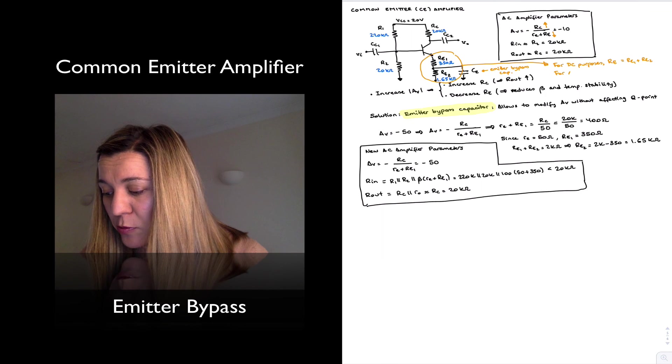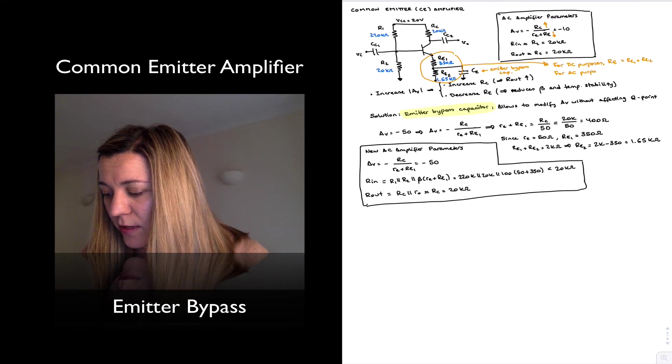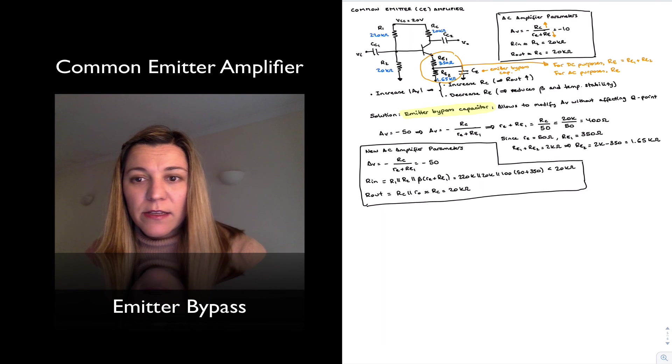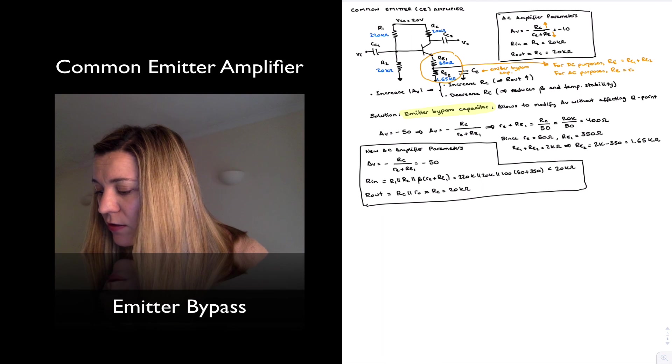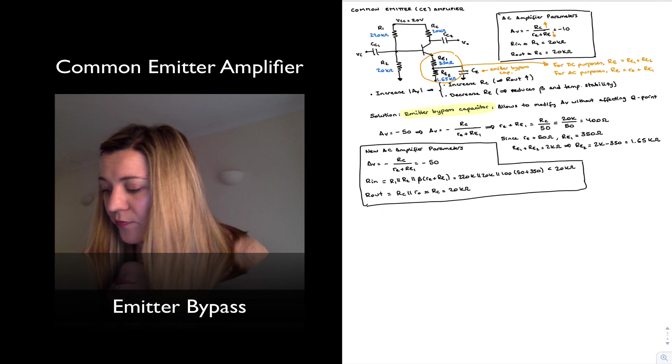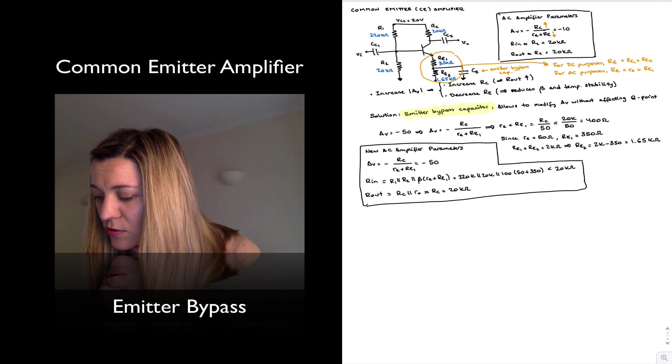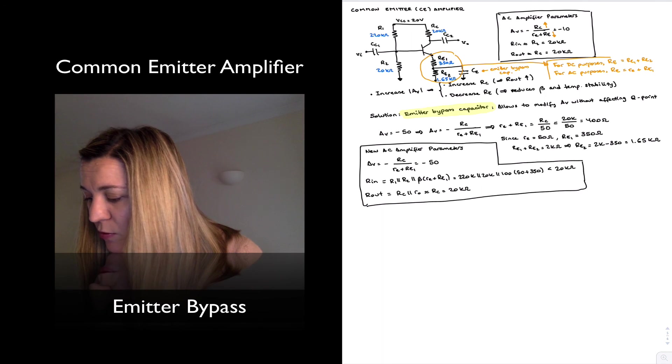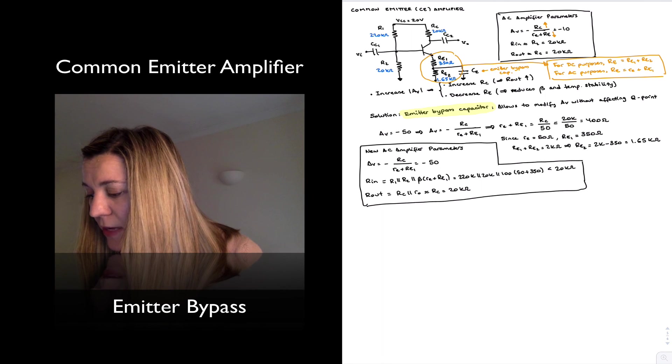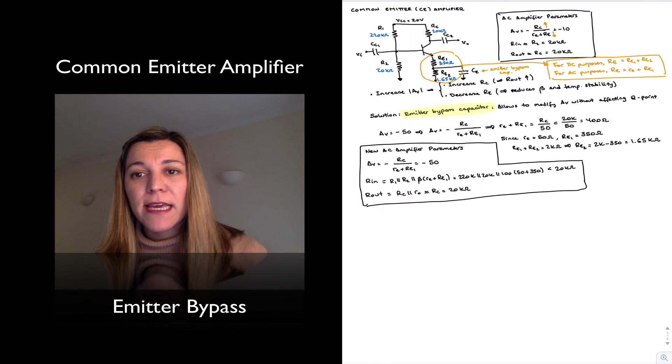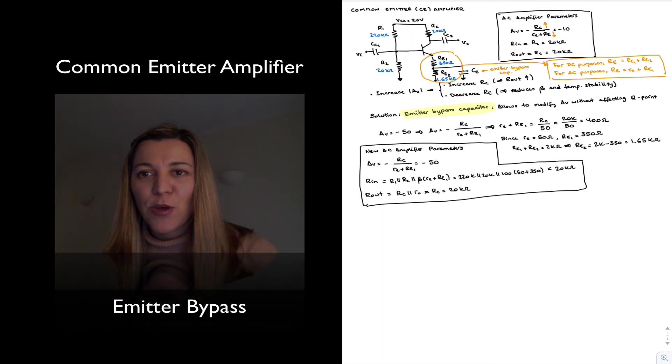For AC purposes, the overall resistance RE is equal to little RE plus RE1, the overall emitter resistance. So that's something important to remember when we are doing our AC calculation. AC gain, input resistance, output resistance. Thank you.